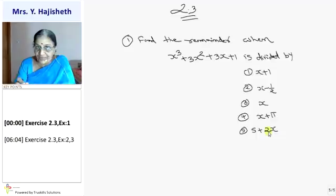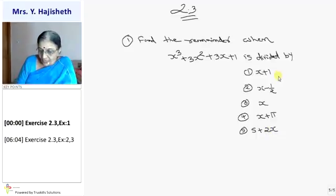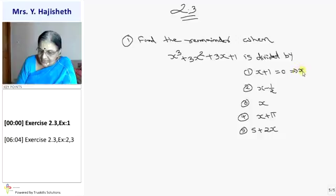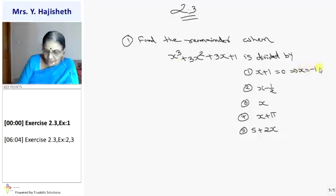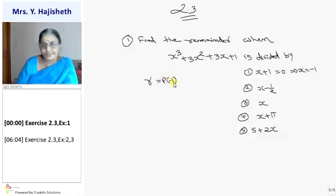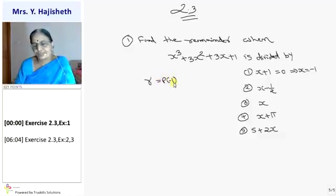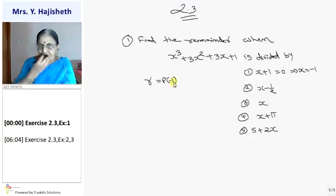What is our method? Find out the zero of the divisor. For the first divisor, x + 1 = 0 gives x = −1. So the remainder is p(−1). I should put x = −1 in p(x).